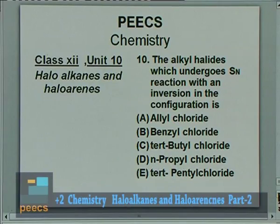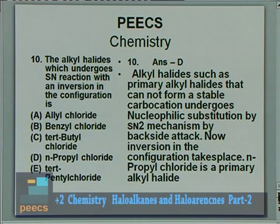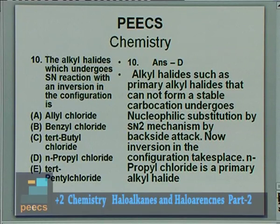Question 10: The alkyl halide which undergoes nucleophilic substitution with inversion of configuration — options are allyl chloride, benzyl chloride, tertiary butyl chloride, normal propyl chloride, and tertiary pentyl chloride. The correct answer is D — normal propyl chloride, the only primary alkyl halide among these. Allyl chloride undergoes SN1 due to resonance stabilization of the allyl carbocation; benzyl chloride also undergoes SN1; tertiary butyl and tertiary pentyl are tertiary. Only normal propyl chloride undergoes SN2 with inversion of configuration. The remaining portions on aryl halides and polyhalide compounds will be discussed in the next episode.